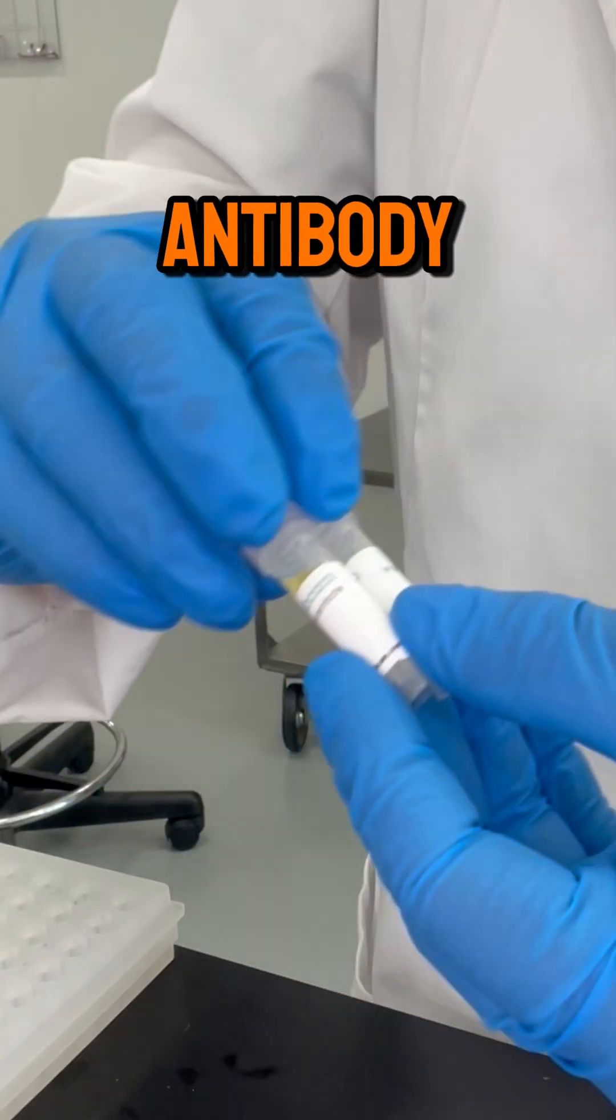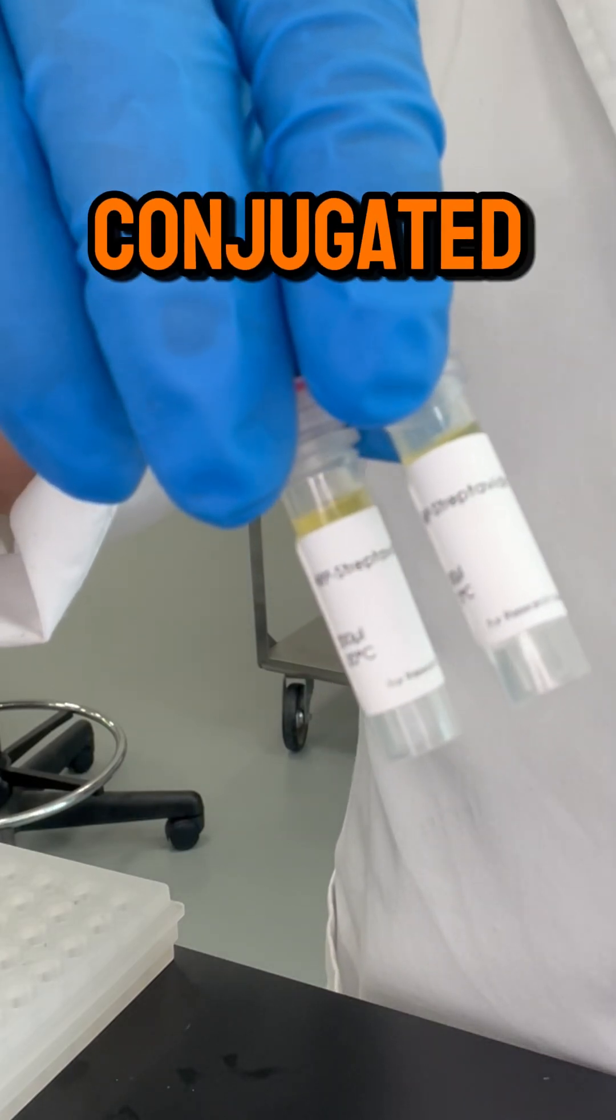Then we add a molecule to bind to antibody number 2. Let's call it HRP-conjugated streptavidin for fun. We give it time to connect to antibody number 2, then there's another wash.